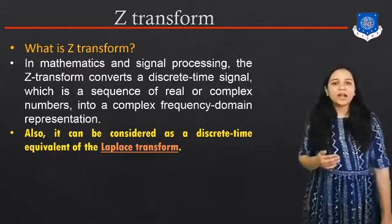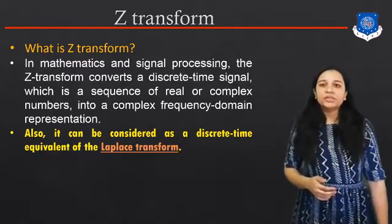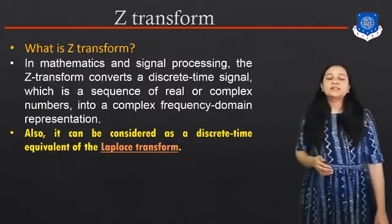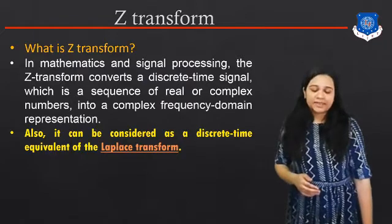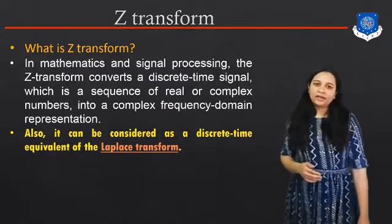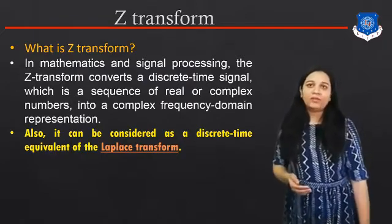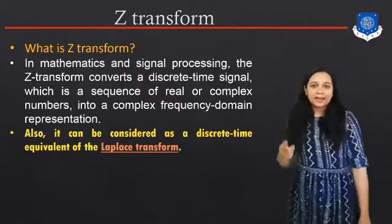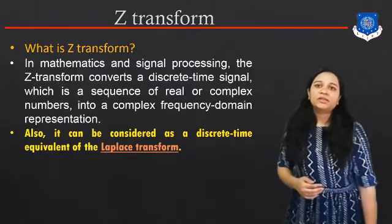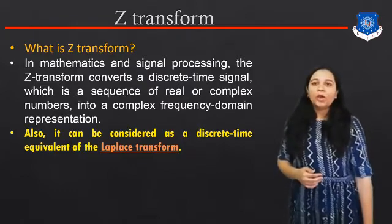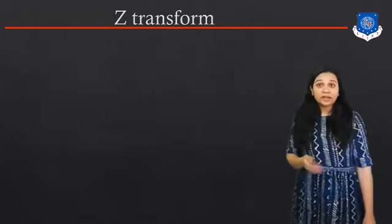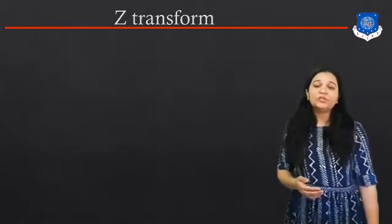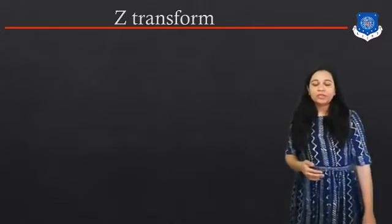That means we will convert a continuous system into a discrete signal. This discrete system is essentially the same as a digital signal. As you know, we have two types of signals in control systems: the first is the analog signal and the next is the digital signal. We will also detail what the Z-Transform is and what equations are used in Advanced Control Theory.